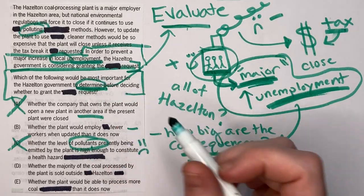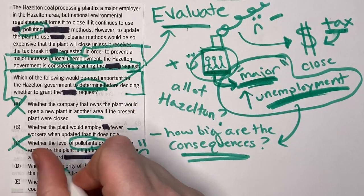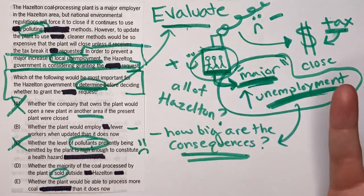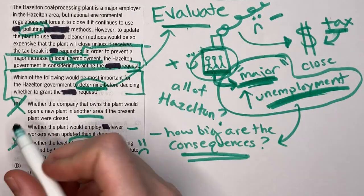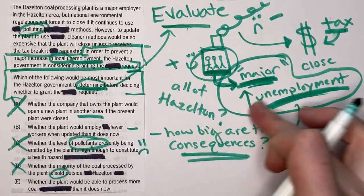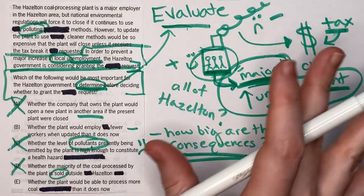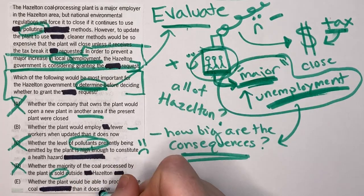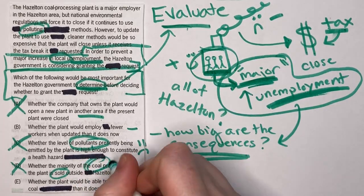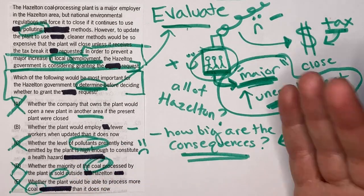Answer choice D asks whether the majority of the coal processed by the plant is sold outside of Hazleton — where they sell the coal is totally out of scope and has nothing to do with unemployment. Answer choice E asks whether the plant would be able to process more coal than it does now — again, it's focusing on output, not unemployment, so E is also incorrect.